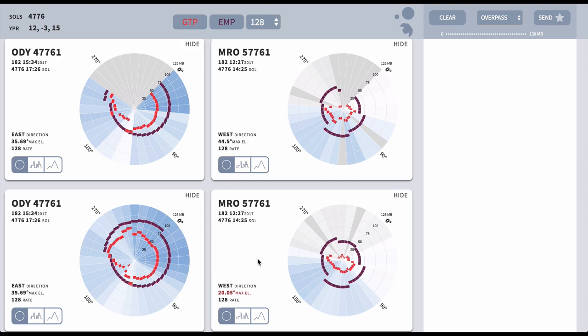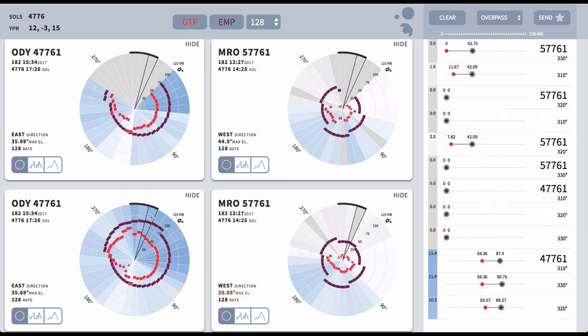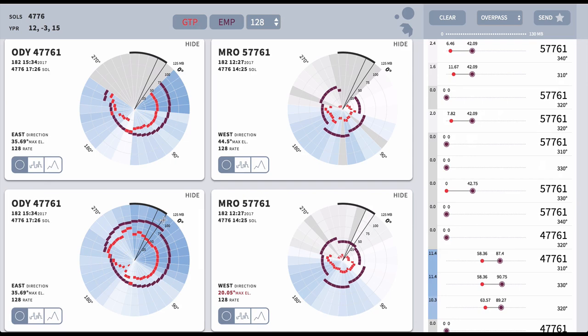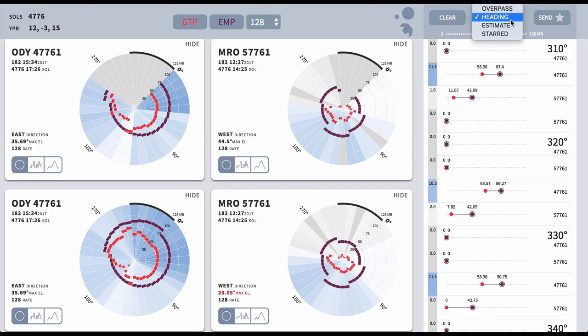The operator can highlight the prospective headings they wish to examine more closely. Selected headings appear in the right-hand panel, where they can be further sorted according to the condition the operator wishes to prioritize that day, such as heading or estimated total data.